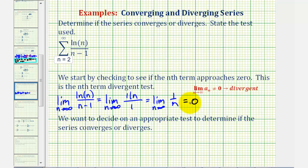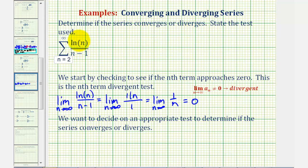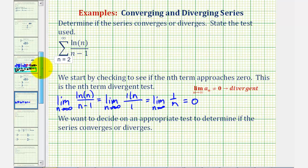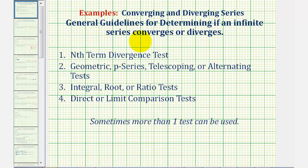So because this limit equals zero, the nth term divergent test does not give us any information, so we have to apply a different test to determine convergence or divergence. Looking at a sub n and the tests we know, none of the standard tests stand out as an obvious choice, which leads us to either the direct or limit comparison test. For this example, we'll use the direct comparison test.